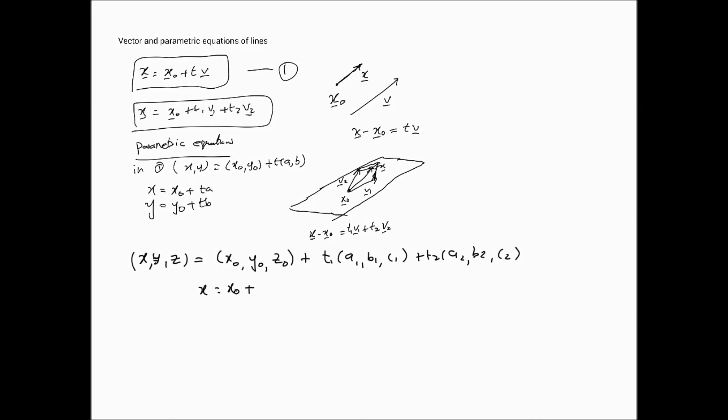Then, we end up with x equals x0 plus t1*a1 plus t2*a2, and y equals y0 plus t1*b1 plus t2*b2, and similarly for z. So, these are the parametric equations associated with the two vector equations that we have considered here.